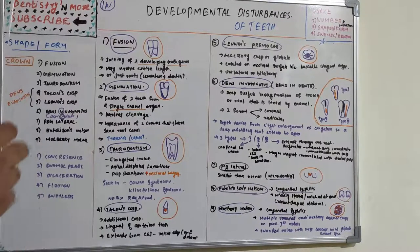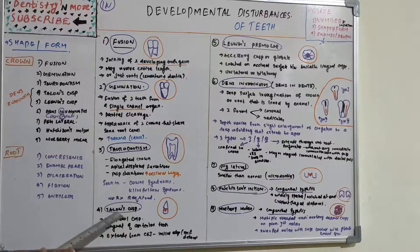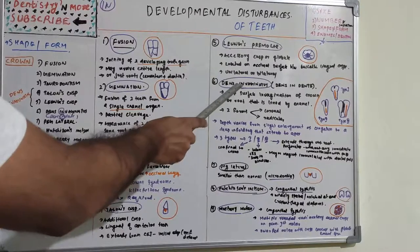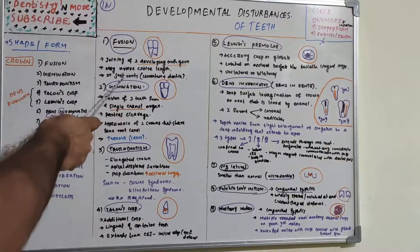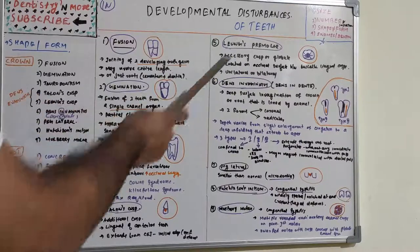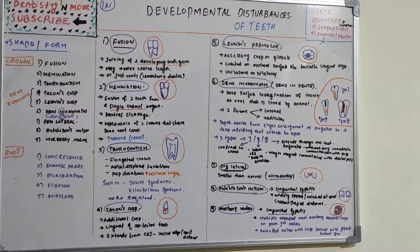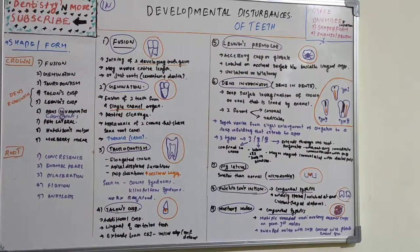To recap the developmental disturbances of the crown: fusion is fusion of two tooth germs; gemination involves twinning from a single enamel organ giving two crowns; taurodontism is an elongated crown; talon's cusp is seen on the lingual part of anterior teeth; Leung's premolar has an extra globule between the buccal and lingual cusps; dens invaginatus has Types 1, 2, and 3; peg lateral is a converged lateral incisor; Hutchinson's incisors are notched crescent-shaped incisors; mulberry molars show enamel globules — both the latter seen in congenital syphilis.